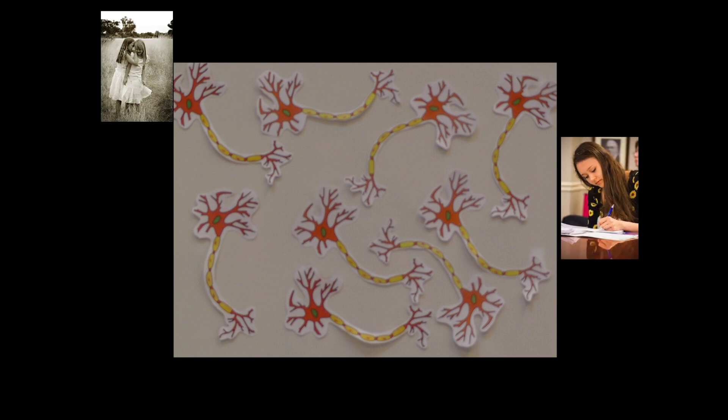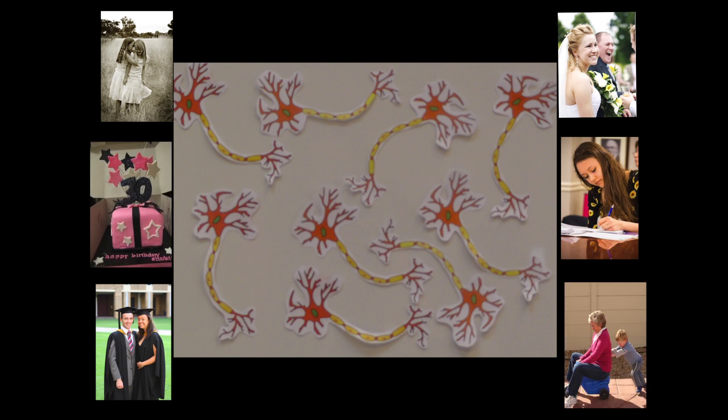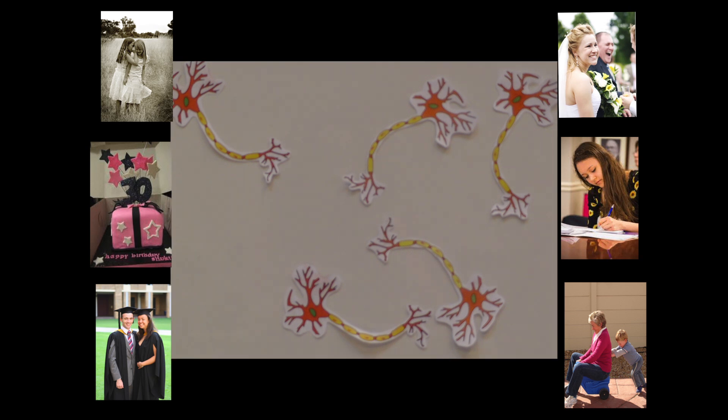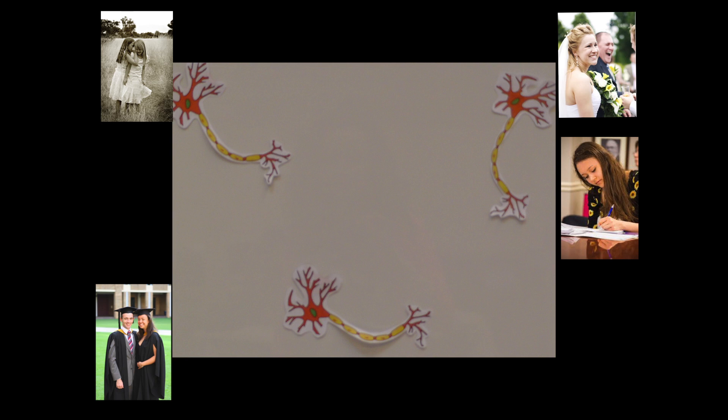The neurons of the hippocampus process all of the information received about an environment or experience and store this information as memories. As these cells die the ability to form new memories is severely reduced and so many people will only have memories from long ago and will be confused or disoriented by their current surroundings.